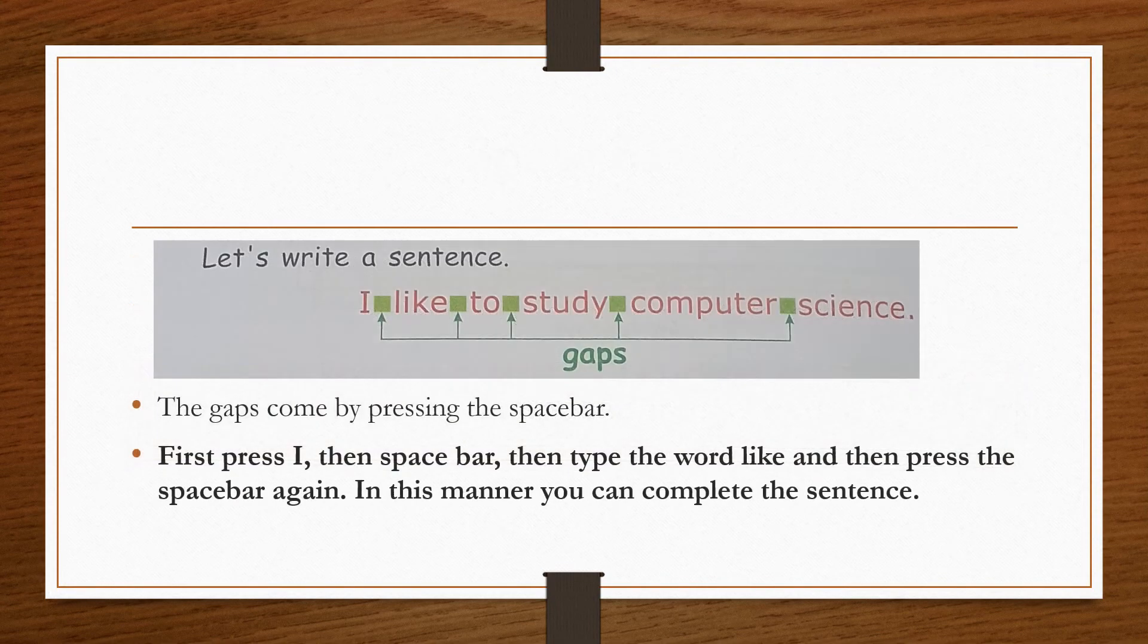Let us know how. Here we'll write a sentence like 'I like to study computer science'. So between these sentences you can find some gaps. Now how are these gaps being made? If there were no gaps, you won't be able to understand the sentence carefully. So in order to provide gaps, what is being used? Space bar.